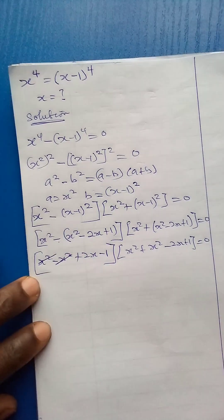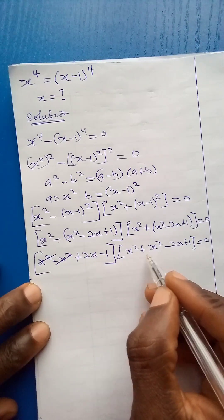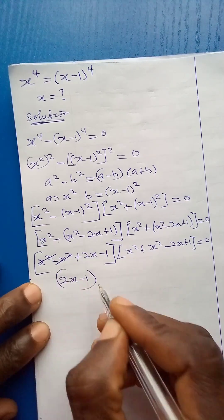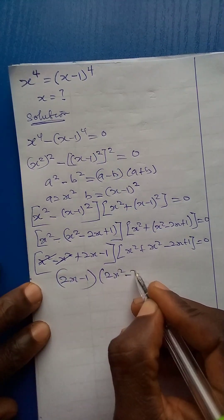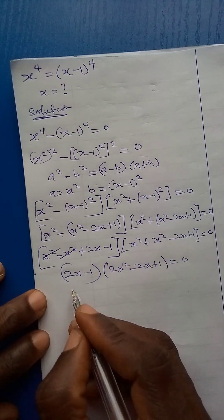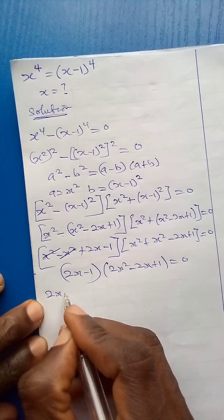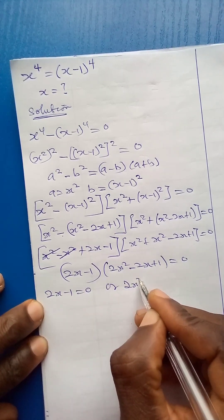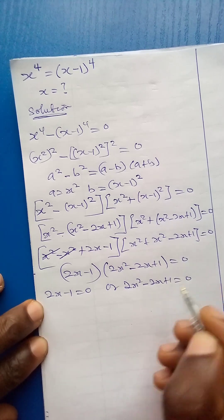The x squared terms cancel out in the first bracket. Adding the remaining terms in the second bracket gives 2x squared. So the first bracket simplifies to 2x minus 1, and the second to 2x squared minus 2x plus 1, equal to 0.